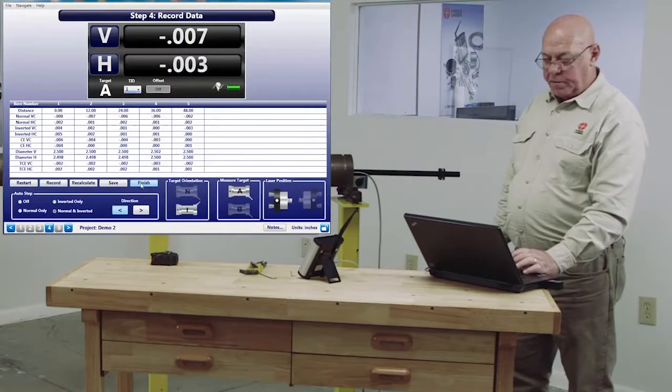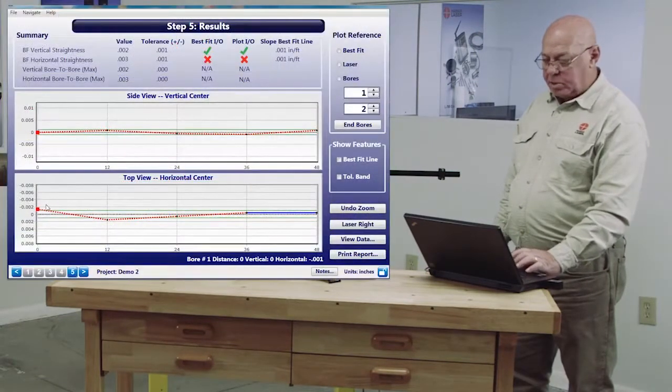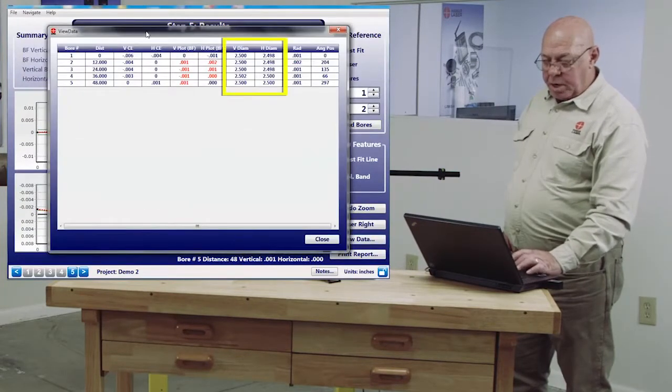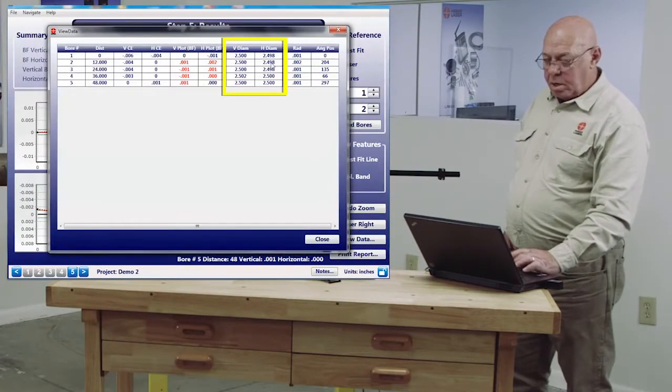Now I'm going to click finish. I have all my data here. This is my straightness data. When I go to the data, my bore diameters are there.